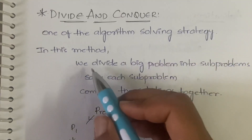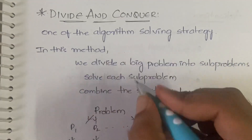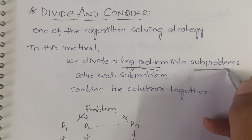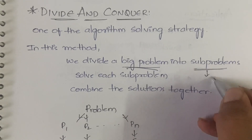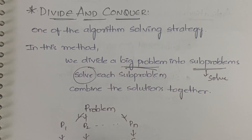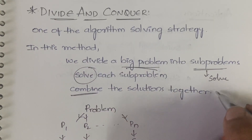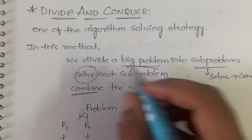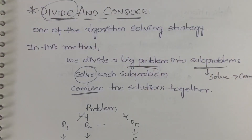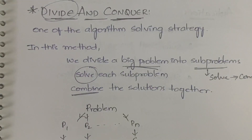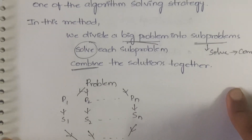In divide and conquer, what we do is we divide a bigger problem into a number of sub-problems. Then we solve each sub-problem. Then we combine all the solutions together to obtain the final solution. So first we divide the bigger problem into smaller parts, then we solve them, and then we combine all those solutions.